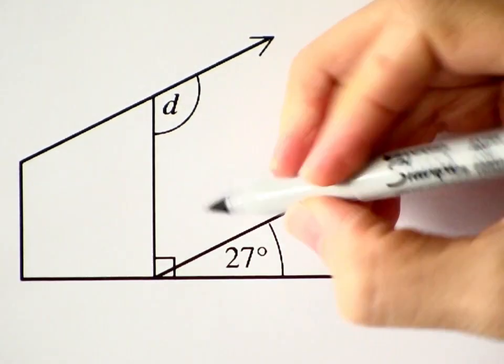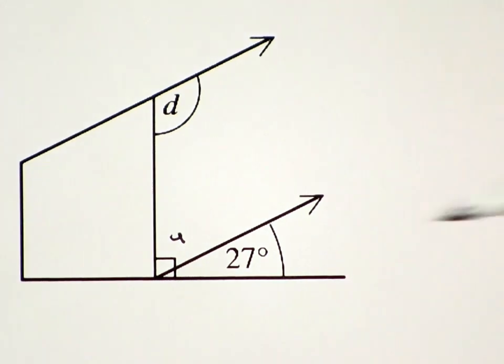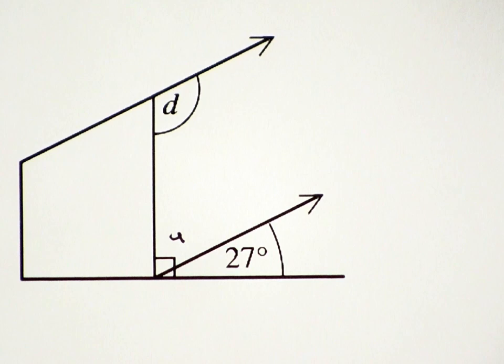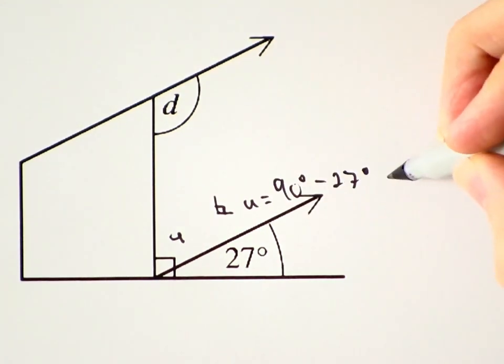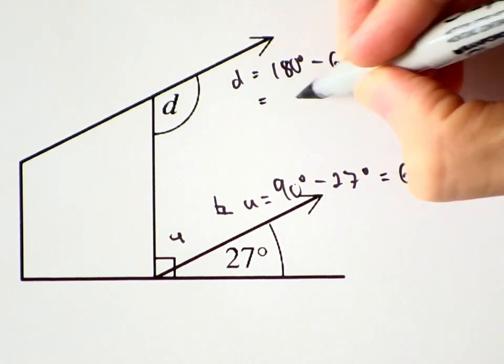D and this angle, let's call it U, are co-interior. And U and this 27 degrees are complementary, because they're in a right angle. So U must be 63 degrees, and D must be 117 degrees.